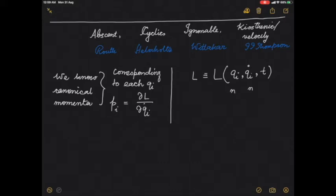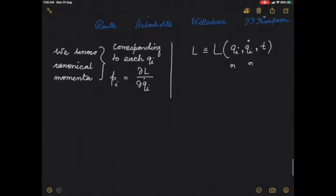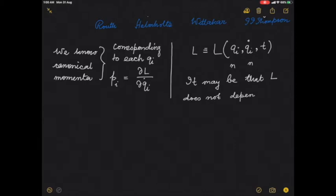It is not necessary that the Lagrangian has to be written in terms of the generalized coordinates all the time. It can be written in terms of any variables — Hamilton's principle is formulated in such a way. Now, it may be that L does not explicitly depend on the k-th coordinate.